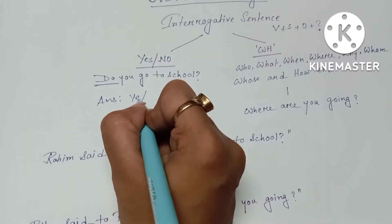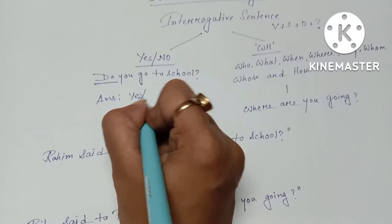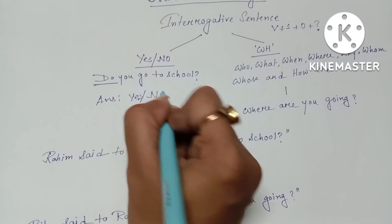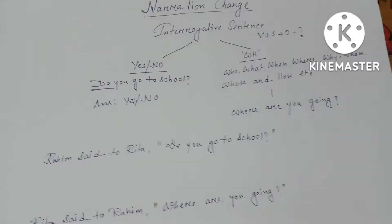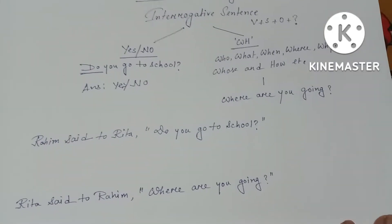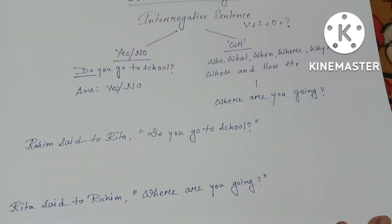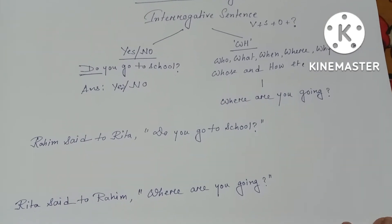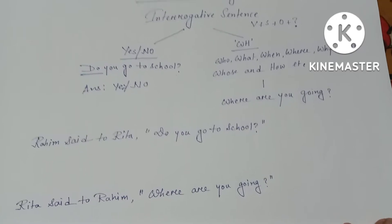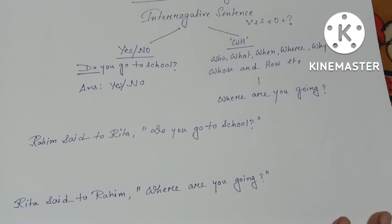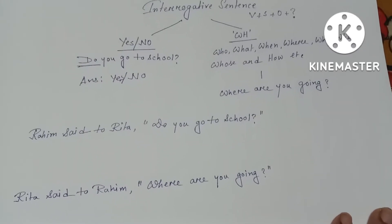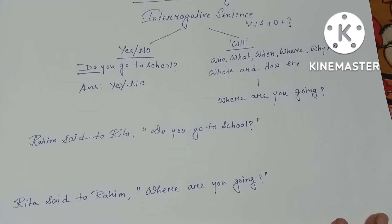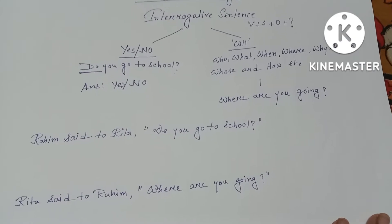Now let's see WH questions. WH questions are questions that start with a W-word or H-word, like: who, what, when, where, why, whom, whose, and how — and so on.